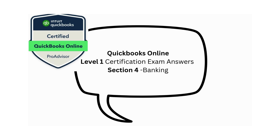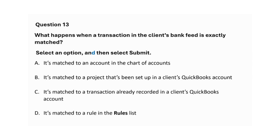Exam question: What happens when a transaction in the client's bank feed is exactly matched? A: It's matched to an account in the chart of accounts. B: It's matched to a project set up in the client's QuickBooks account. C: It's matched to a transaction already recorded in the client's QuickBooks account. D: It's matched to a rule in the rules list. The correct answer is C: it's matched to a transaction already recorded in the client's QuickBooks account.